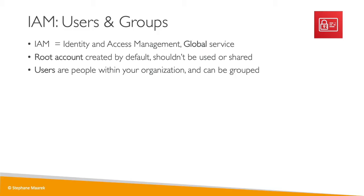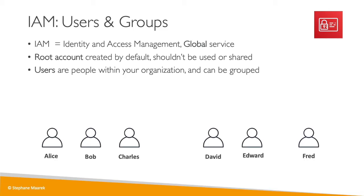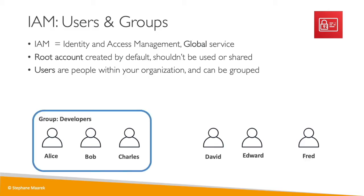Let's take an example. We have an organization with six people: Alice, Bob, Charles, David, Edward, and Fred. Alice, Bob, and Charles work together — they're all developers. So we're going to create a group called the developers group, containing Alice, Bob, and Charles.